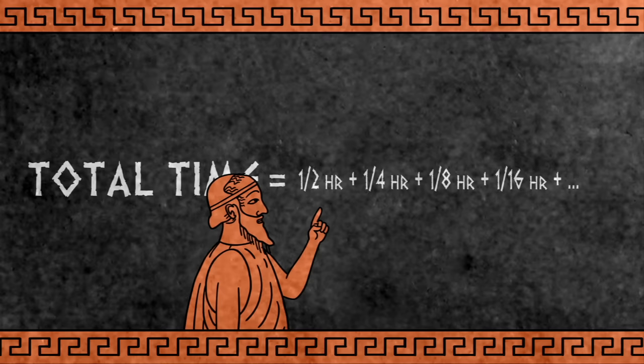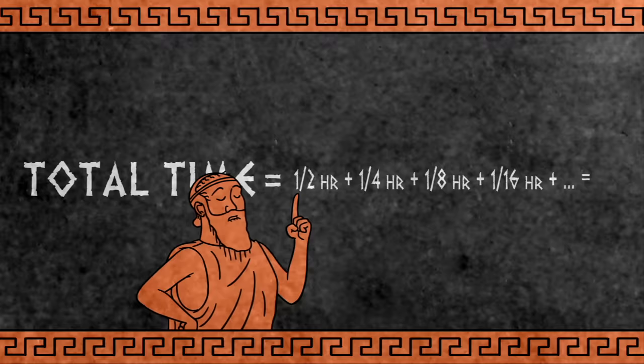Now, Zeno might say, since there are infinitely many terms on the right-hand side of the equation, and each individual term is finite, the sum should equal infinity, right?